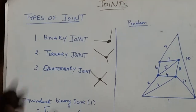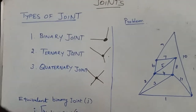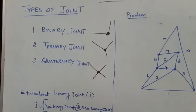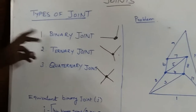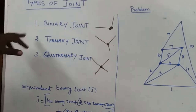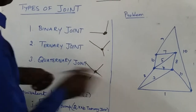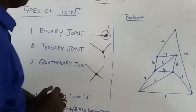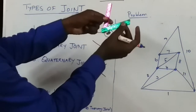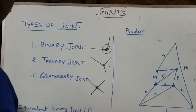Next we discuss about joints. A joint means a connection - it is an element where links connect. What are the types of joints? There are three types: binary joint, ternary joint, and quaternary joint. A binary joint means two links in a connection. Two different links in a connection is called a binary joint. Here is a sample for binary joint.